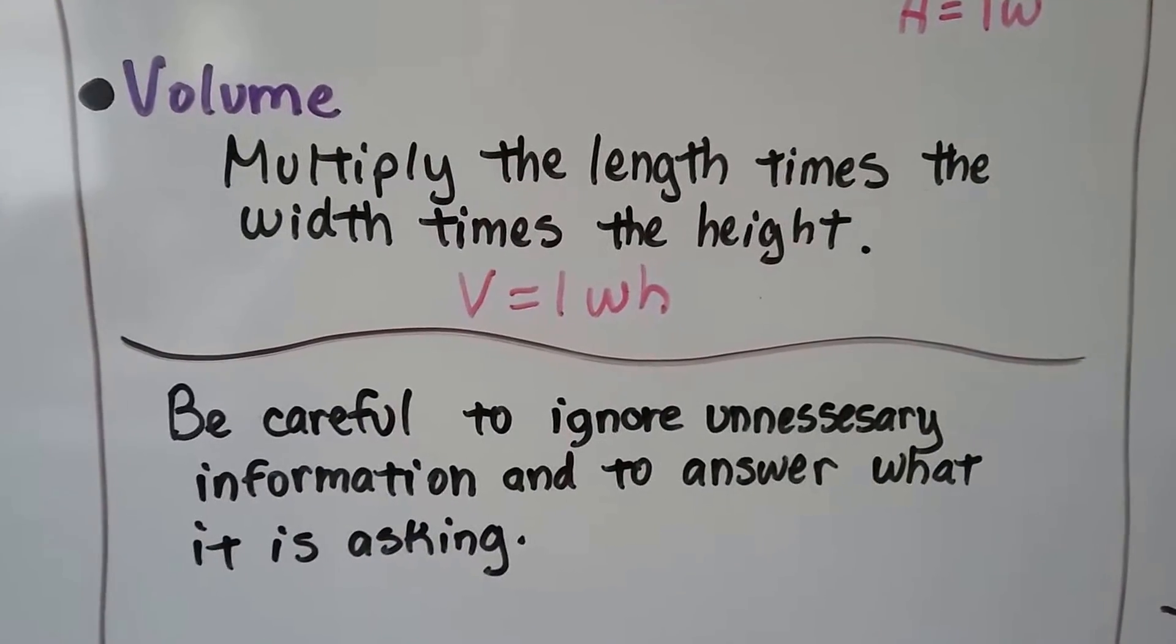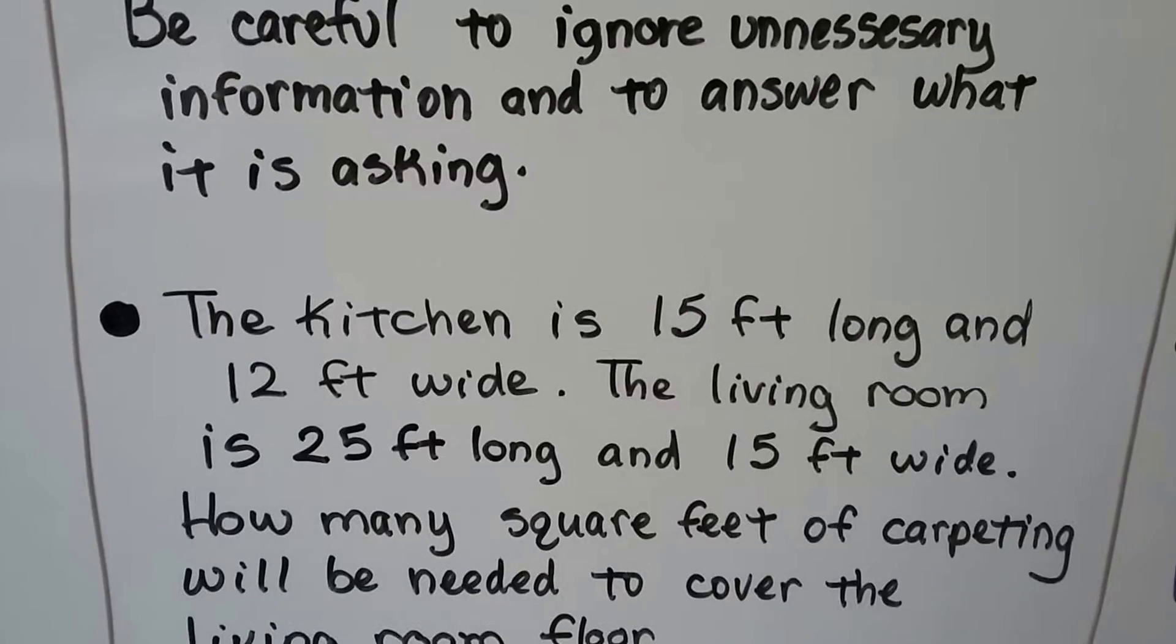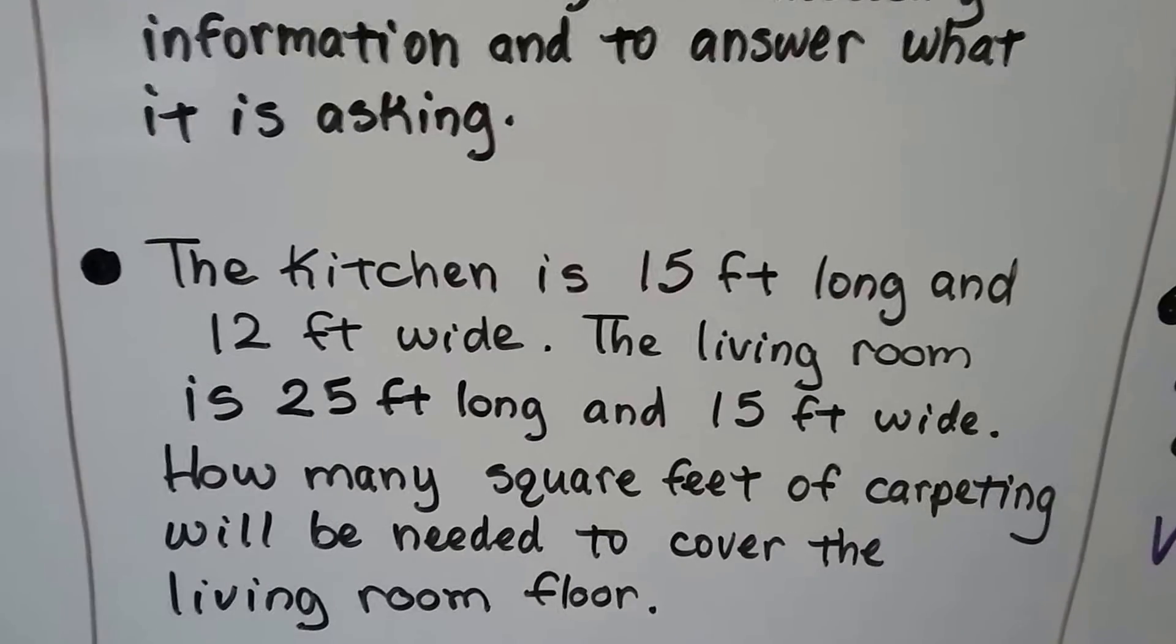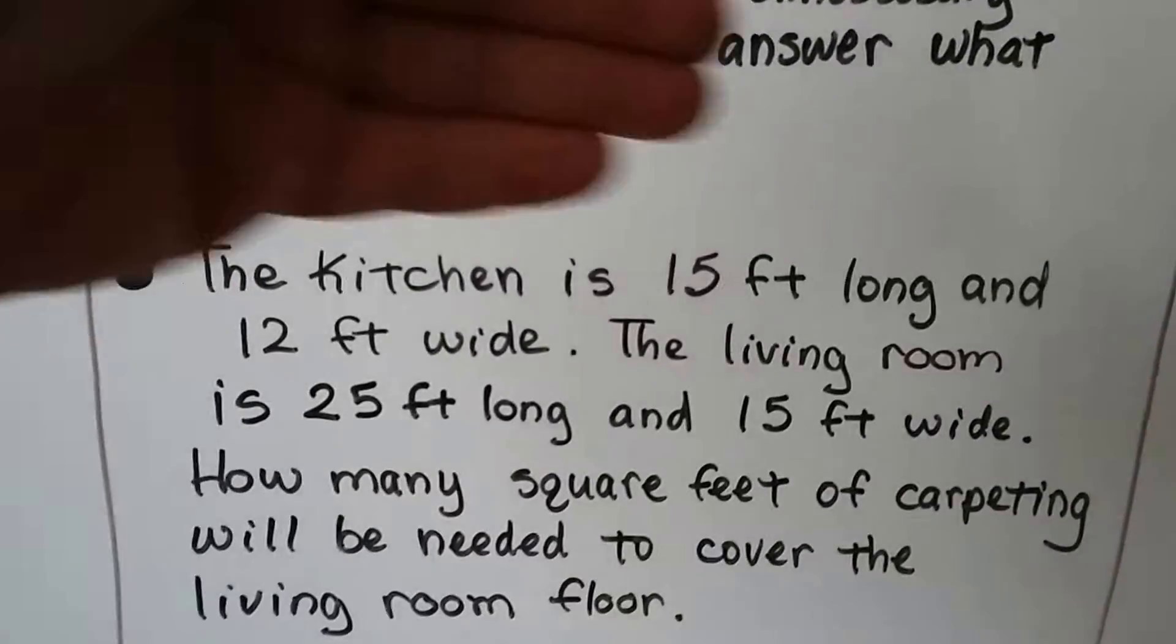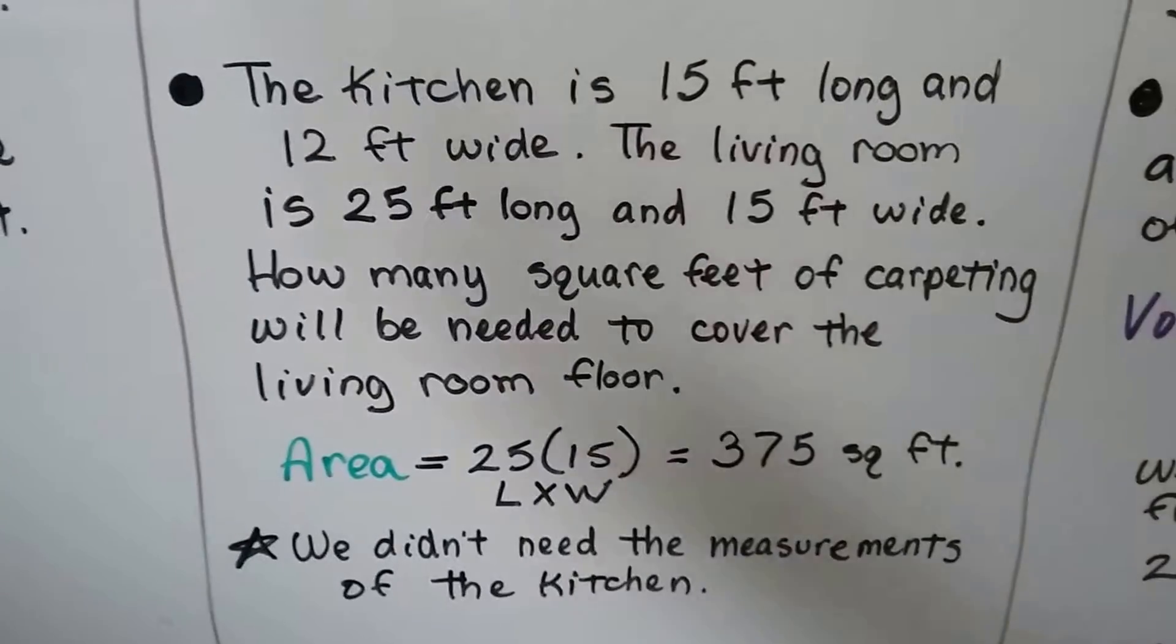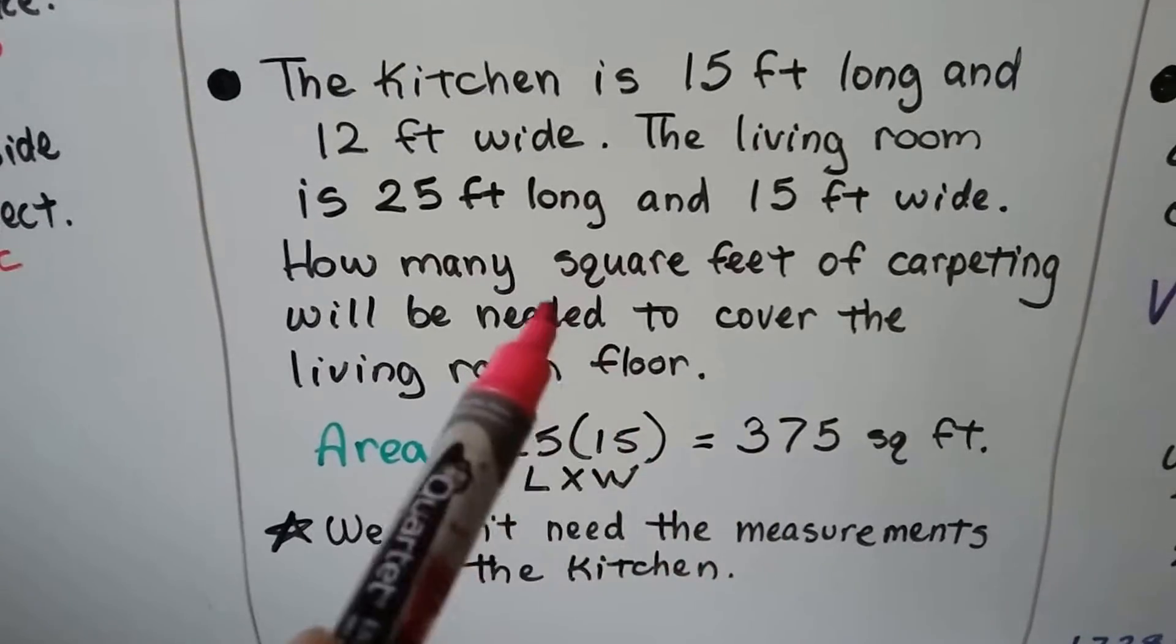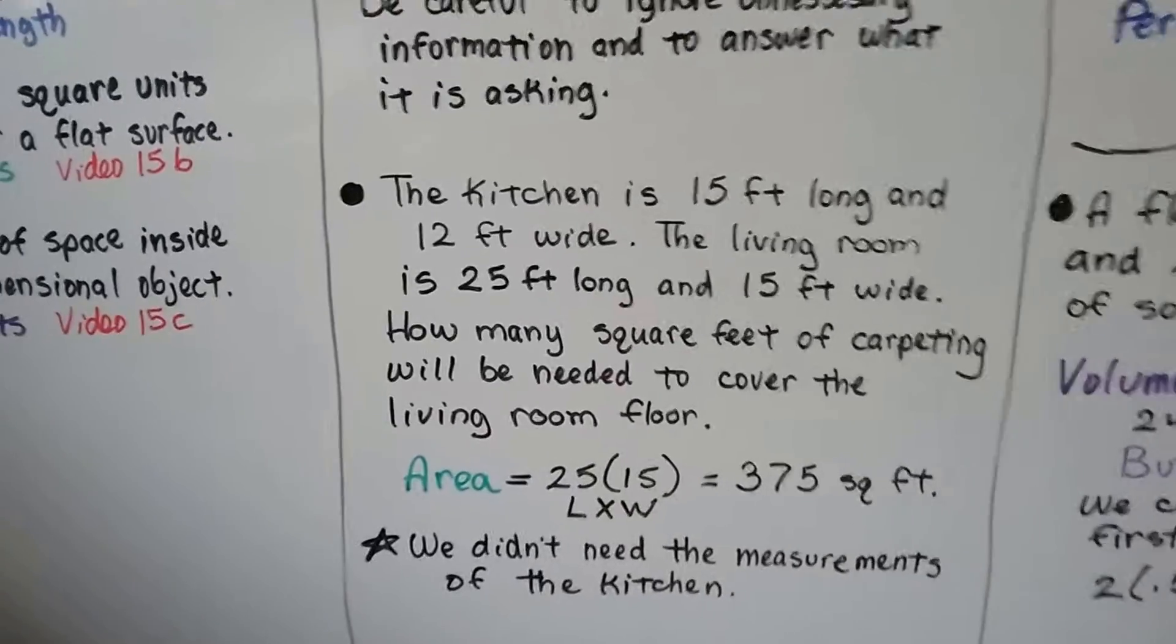Now, be careful to ignore unnecessary information and to answer exactly what it's asking. This problem talks about the living room floor. It gave us information about the kitchen. So we need to ignore this kitchen information. We need the area of the living room floor. So we have 25 feet and 15 feet. We multiply those and get 375 square feet. That's what it was asking. So be careful if they trick you with unnecessary information.